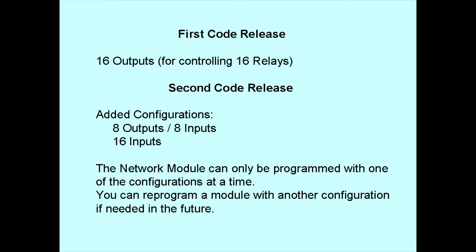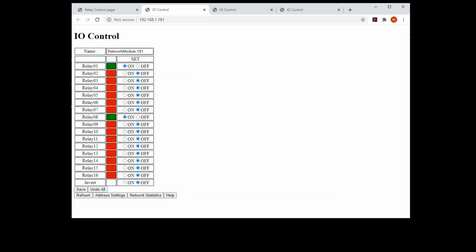The first code release provided 16 outputs on the module for controlling up to 16 relays. I've now created two new code threads. On the screen I'm showing the GUI for the original configuration that I demonstrated in the first video. This configuration can control up to 16 relays.